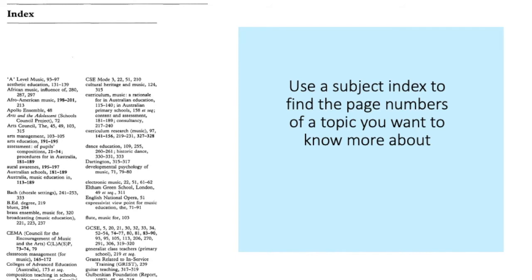Most scholarly and academic books will have an index located at the back of the book. This is a tool that can help you locate specific information on a topic or on a piece of music within that book. For example, if I was researching the Moonlight Sonata by Beethoven, I might find a biography of Beethoven and then use the index at the back to look up the Moonlight Sonata. You can use the page numbers after the term in the index to see where that piece is mentioned in the book.